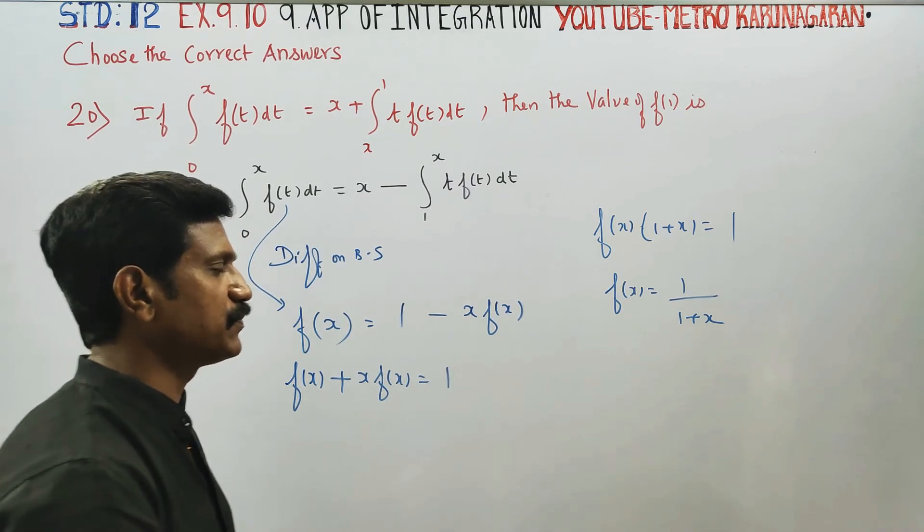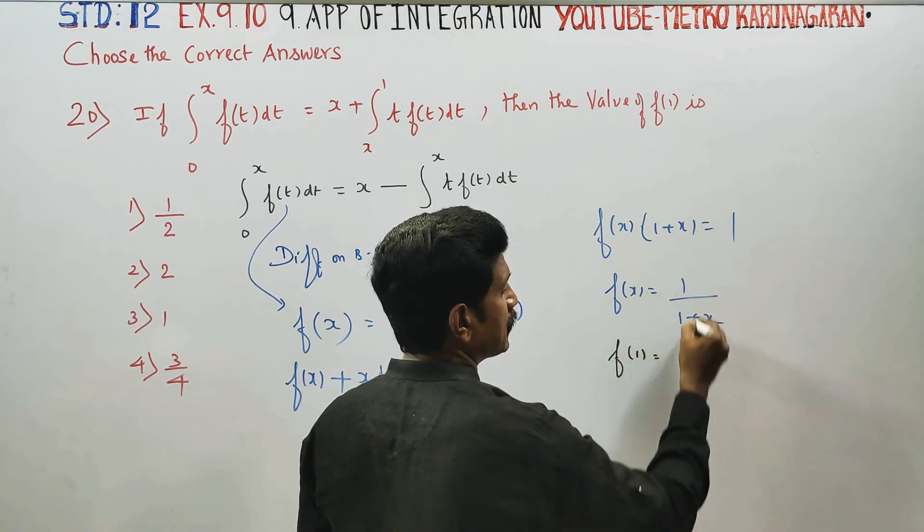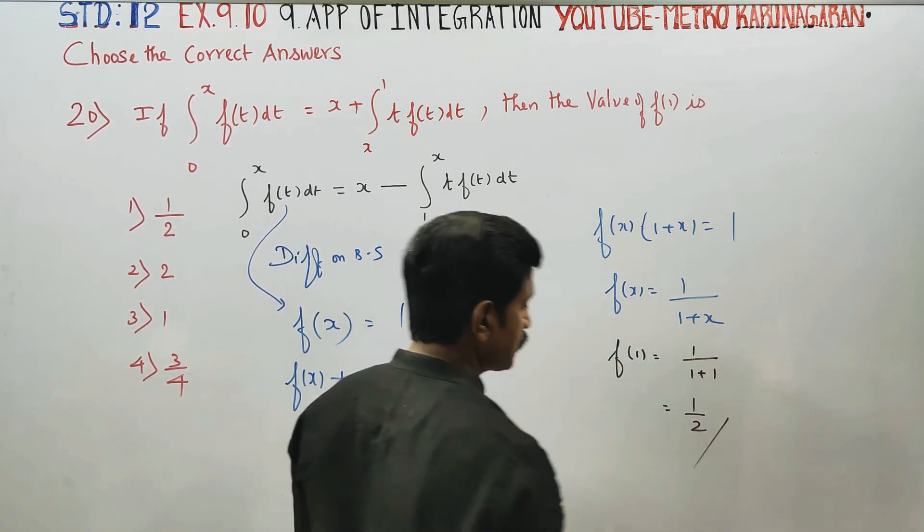f(1) equals 1 by 1 plus x. f(1) equals 1 by 1 plus 1. The answer is 1 by 2, your final answer.